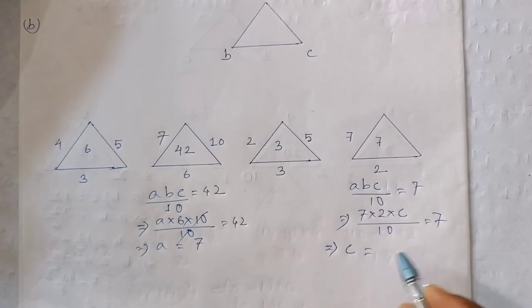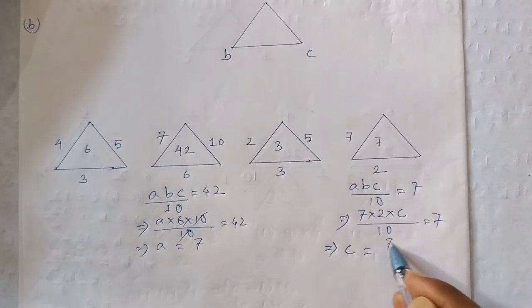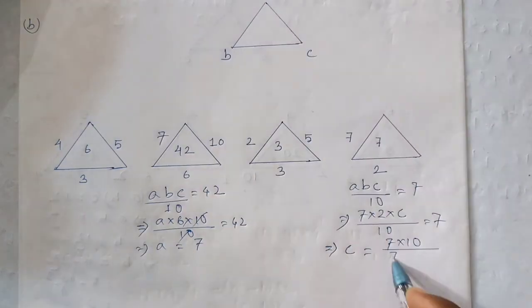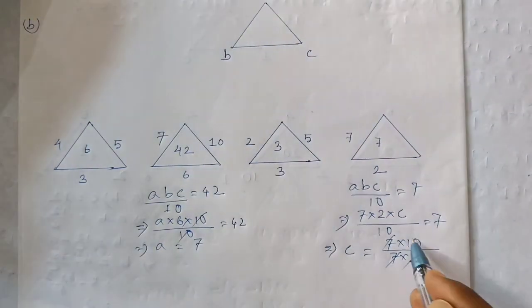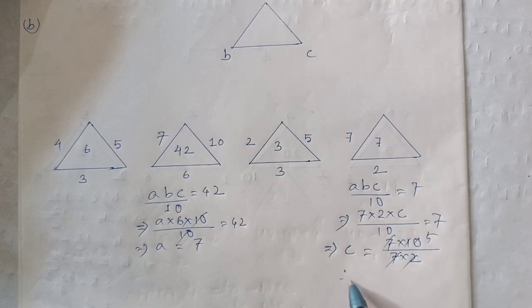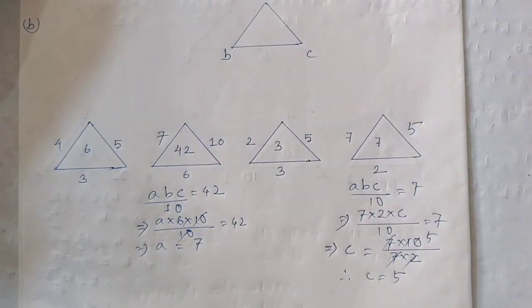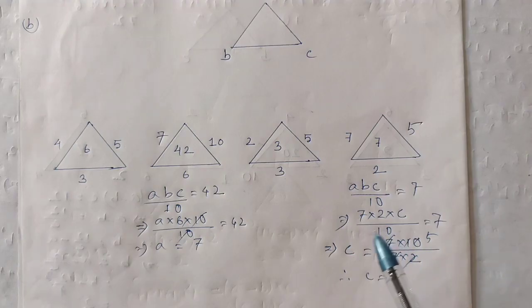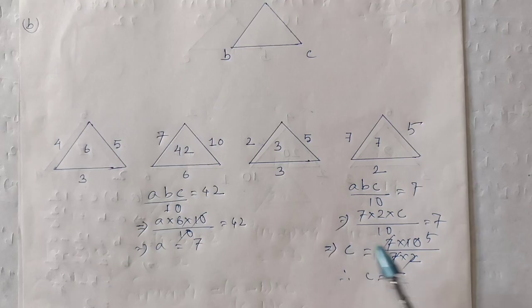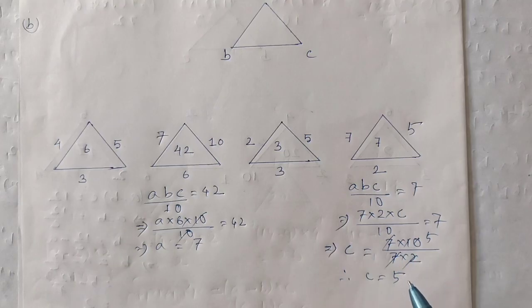This implies C equal to 7 into 10. 7 x 10, 7 x 2, 8 x 10. Area 250. c equal to 5. c equal to 5. Let's watch the video.